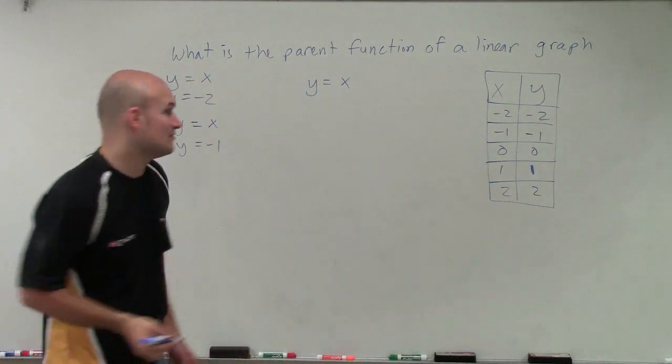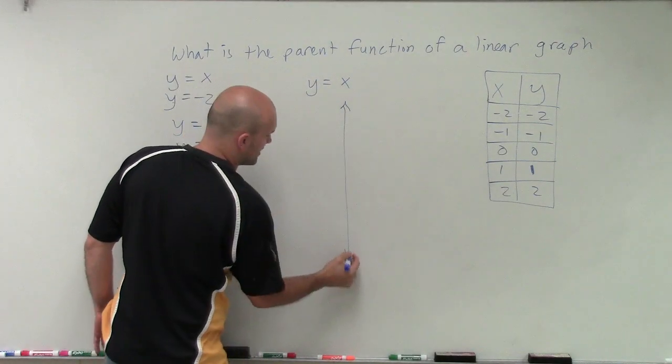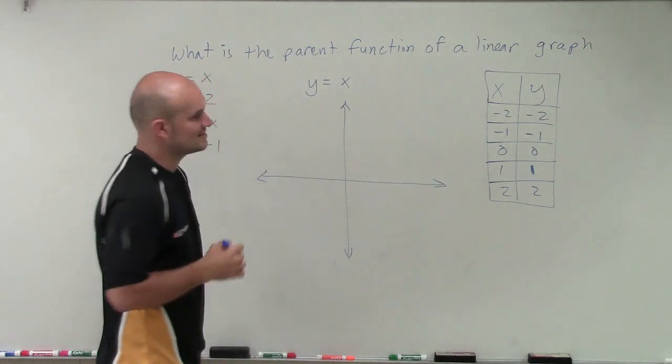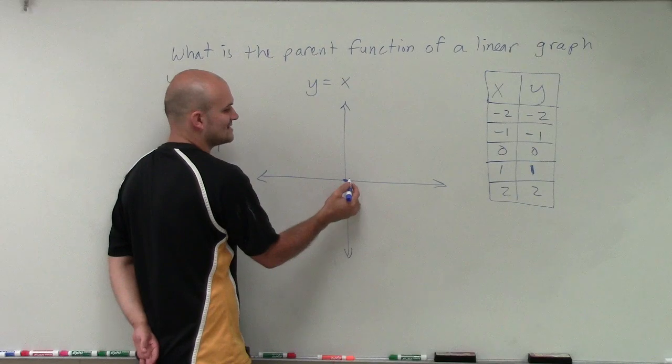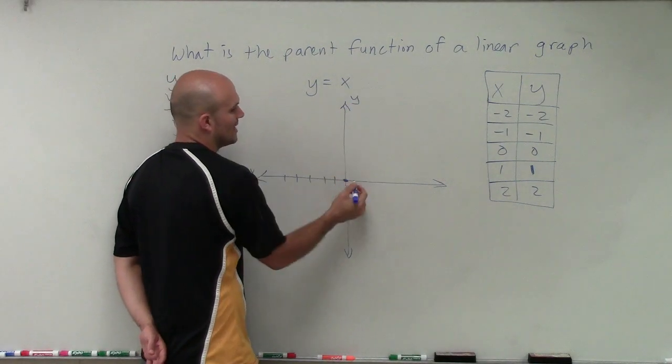When graphing the linear function, I need to apply these points as my coordinate points. So I'll have my y-axis and my x-axis. Remember, we're going to start at the origin 0, 0. The first point is x is negative 2, which will be in the negative direction on my x-axis.